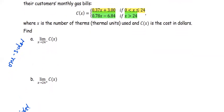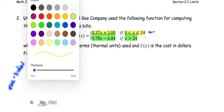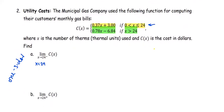In part A, as x approaches 24 from the left, it means x is going to be slightly less than 24. If it is slightly less than 24, the function will be defined as the one highlighted in yellow. We write it as the limit of C(x), which is 0.37x plus 3, as x approaches 24 from the left. This is a polynomial function, so we find the limit the same way we compute the function value at x equals 24: 0.37 times 24 plus 3, which comes out to $11.88.